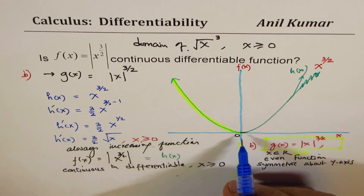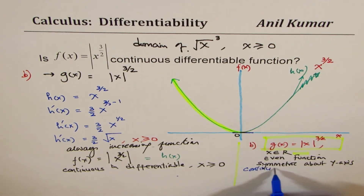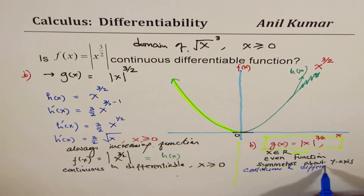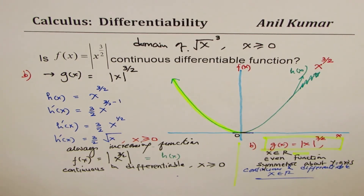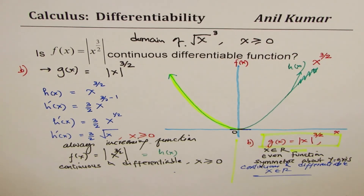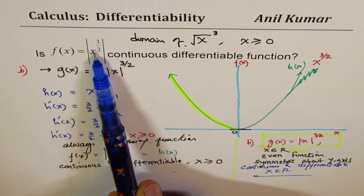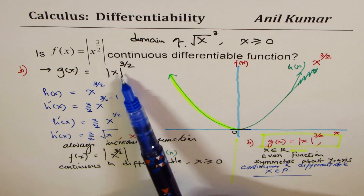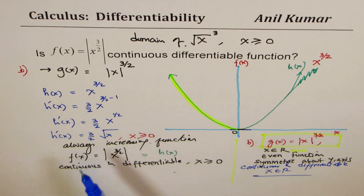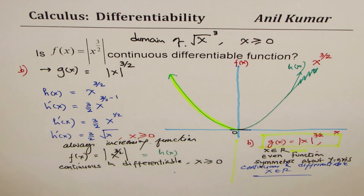In this particular function you will see that it's a smooth curve — it is differentiable. So it is continuous and differentiable on the entire domain, where x belongs to real numbers. So what we see in this video: if you consider f of x equals absolute value of x to the power of 3 over 2, the domain is x greater than or equal to 0. If you consider g of x equals absolute value of x, to the power of 3 over 2, then the domain is all real numbers. And both these functions are differentiable in their respective domains.